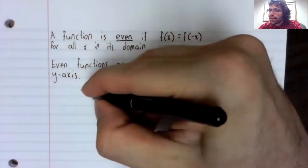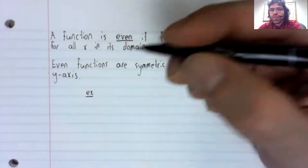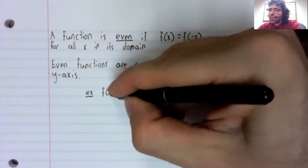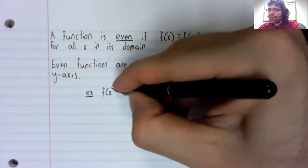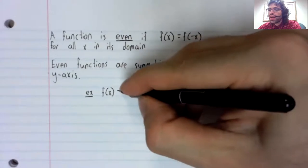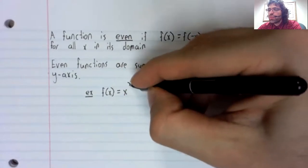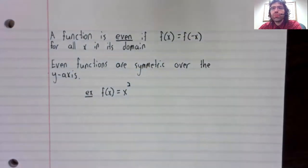And as an example of an even function, in fact, the example that gives these things their name, f(x) equals x to an even power. Say f(x) equals x squared.